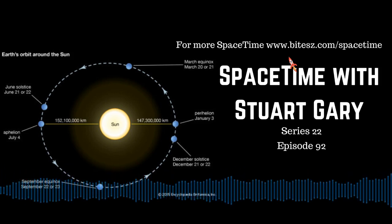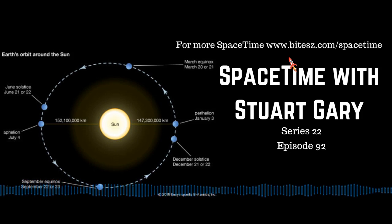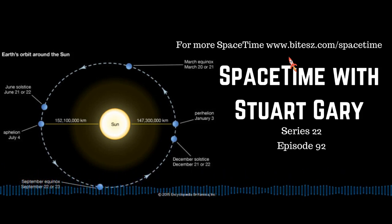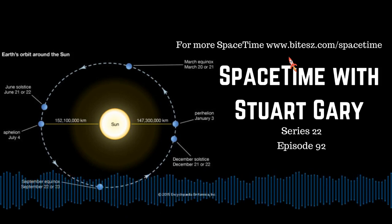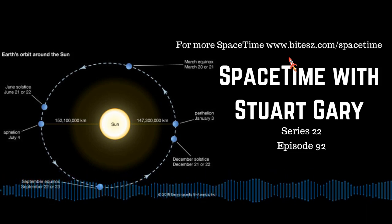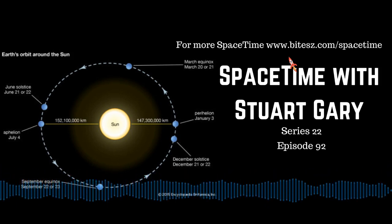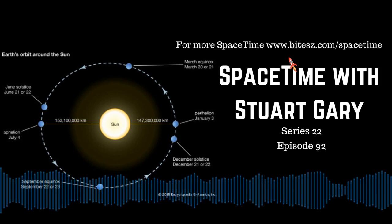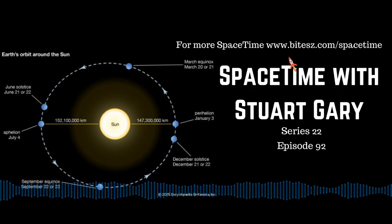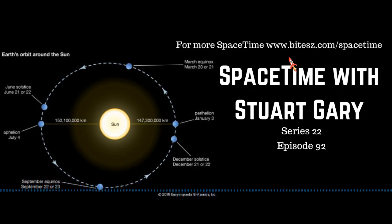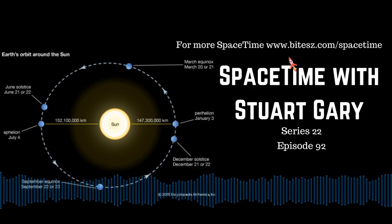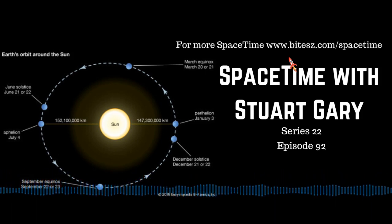Interestingly, although they have no electric charge, neutrinos do have their own corresponding antimatter counterparts, identified by their opposite chirality or handedness. Neutrinos interact with other matter only through gravity and through the weak nuclear force. In fact, they're so weakly interactive that several trillion of them are passing through you right now without you even noticing.